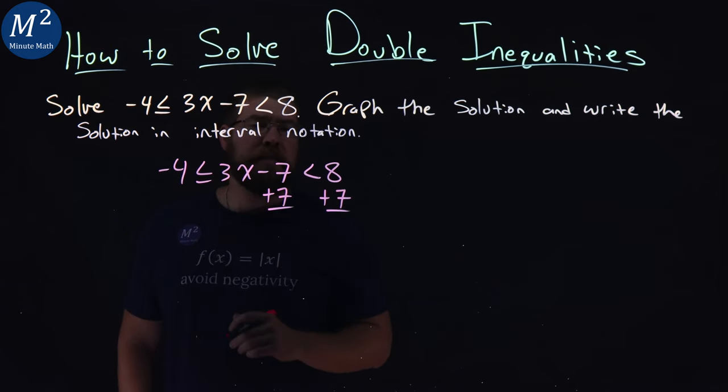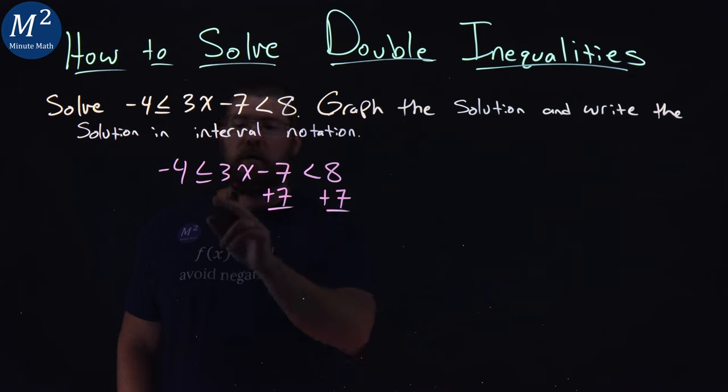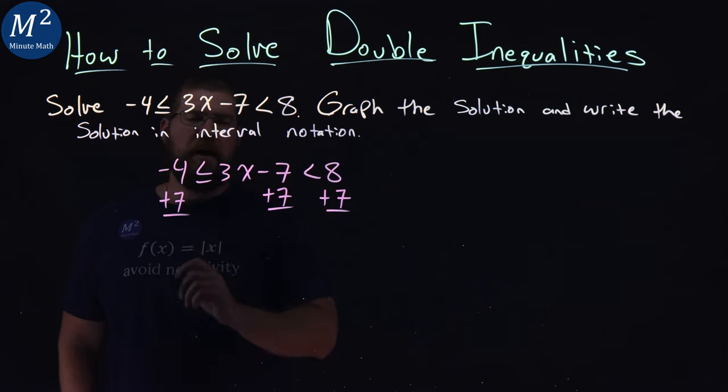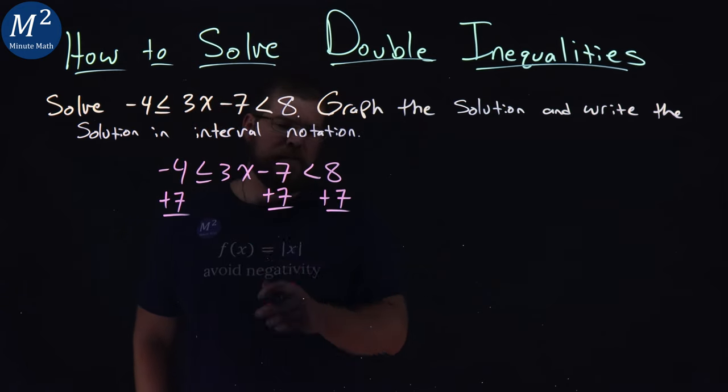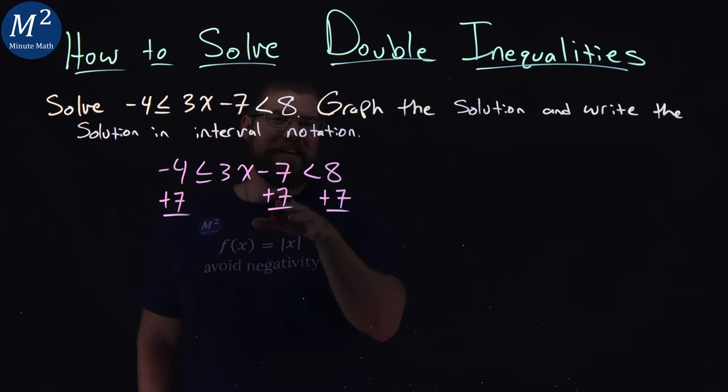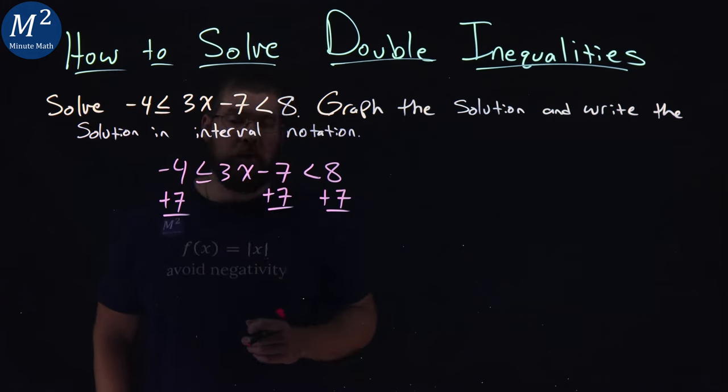I would add a seven as my first step to both sides. But we have two inequalities here so we actually have to do it to all three sides. And that's really the gist of how to solve these. You want to add whatever you're doing, the operation has to go to all parts.